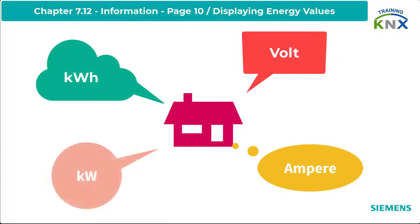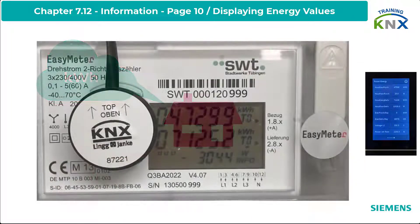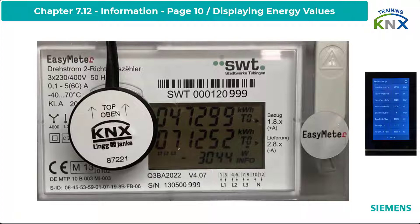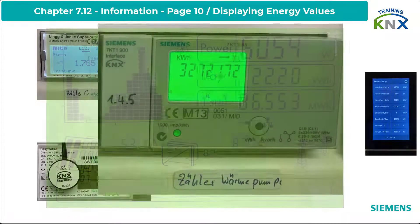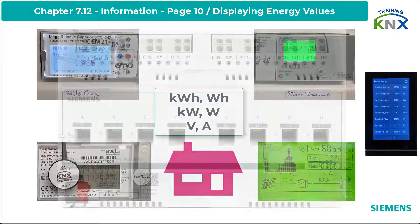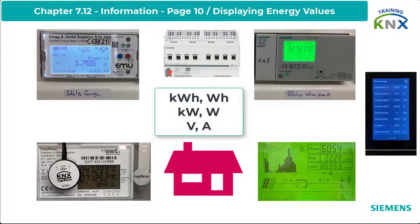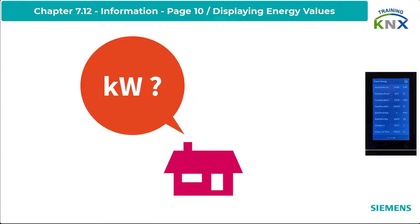Anyone who operates a smart building also wants to check the current status of the consumption meters from time to time. After all, you no longer have just one official calibrated electricity meter from the power supplier, but sub-meters that count the active energy per phase, or even individual consumers. They are energy actuators that provide an energy meter and instantaneous power measurement per channel, because beside the consumption, the current power is also of interest.